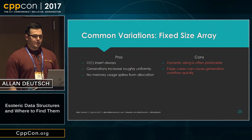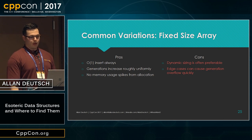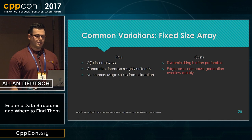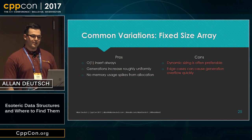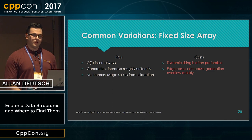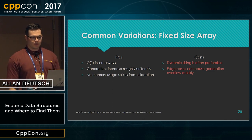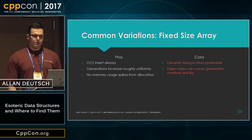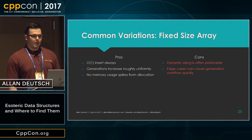Another variation is using a fixed size array. This one will have constant time insert in all cases since it doesn't ever grow. The generations increase roughly uniformly as well since they're all allocated from the start, and there are no memory usage spikes. Unfortunately, dynamic sizing is typically something we want to have, so this variation isn't usually what we'd want, and some edge cases can cause the generation to overflow quickly.